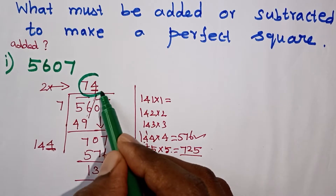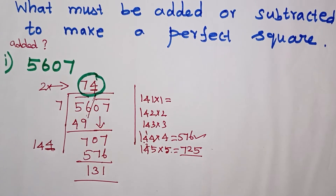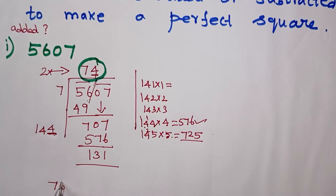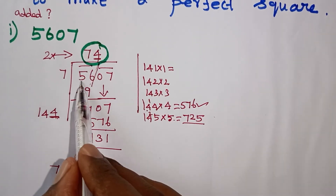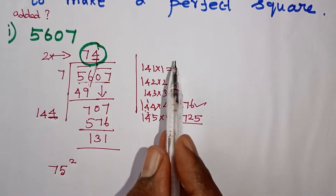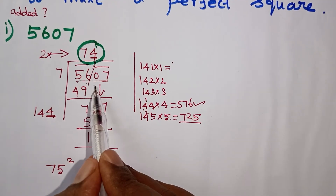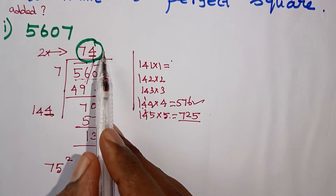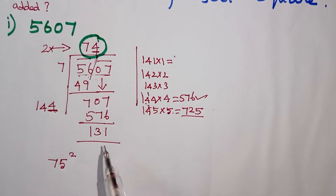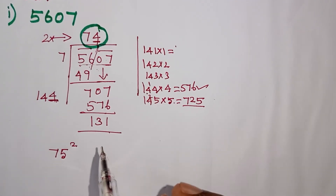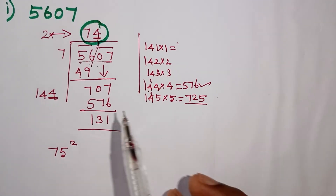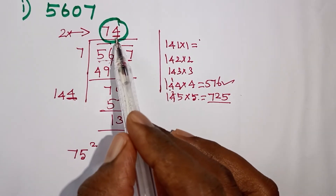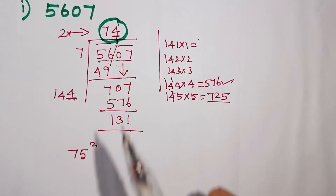You can find this quotient. If you find this quotient, the next number will be squared — either 74 squared or 75 squared. What is subtracted is very easy: the remainder is subtracted. But what must be added is the next perfect square number.